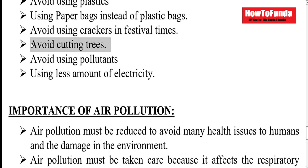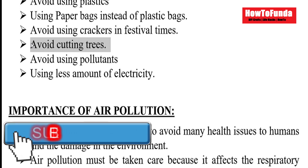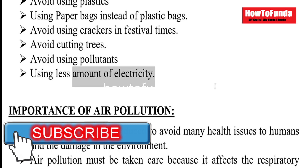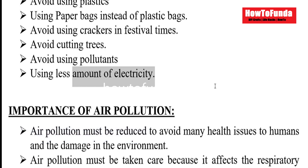We should avoid deforestation — we should avoid cutting trees, and as much as possible we should plant new trees to bring more oxygen into the environment, so that trees can absorb more carbon dioxide. We should generate more electricity via solar panels or solar-related sources, rather than burning coal for power. Or we should adopt more hydroelectricity.